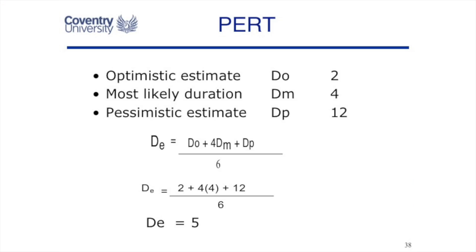The PERT equation uses one optimistic duration, four of the most likely, and one of the pessimistic — giving six durations total, divided by six — to get an expected duration for the task. Even if the expected duration comes out as five days, if someone said it could take as long as 12 days, that's concerning. But just asking for those three durations — two days optimistic, four days most likely, 12 days pessimistic — is itself assessing the risk and gives you a way of evaluating how risky that task's duration is.